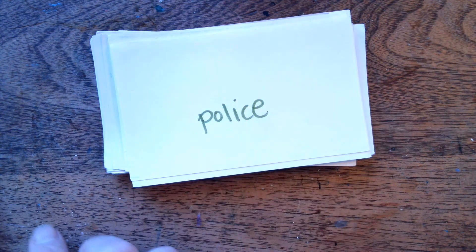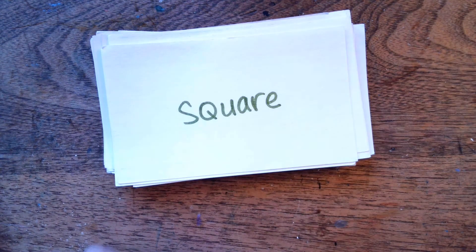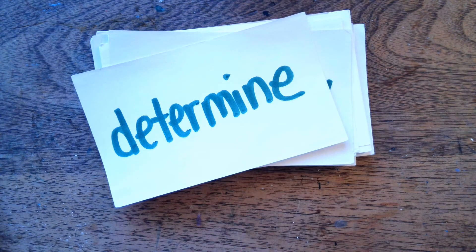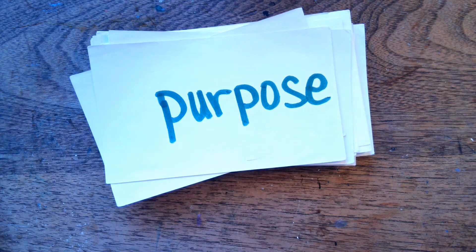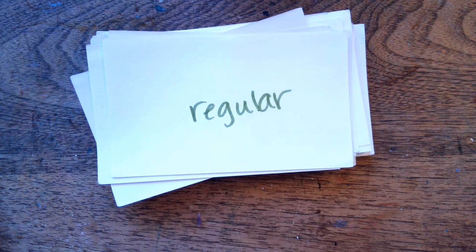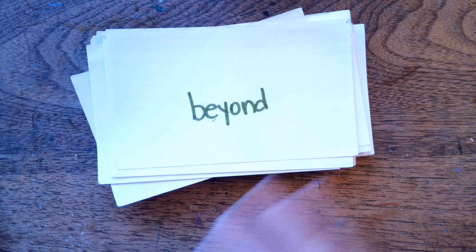Sight word — worry. Sight word — police. All of these are sight words. Approve. Square — like a square. Next one is determine. Purpose. Rapid. Regular. Beyond. So those are the ones we're going to practice this week.